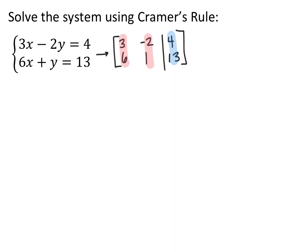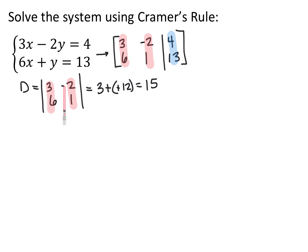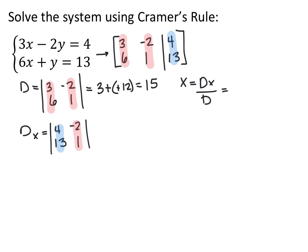We have a system of equations: 3x minus 2y equals 4 and 6x plus y equals 13. I wrote an augmented matrix for it and will solve using Cramer's rule. First, find the regular determinant D — the determinant of just the coefficient matrix without the answer column. Looking at just the coefficients, we get 3, negative 2, 6, 1. Multiply down, subtract, multiply up, and we end up with a determinant of 15. Now for x: replace the x column with the answer column, so replace 3 and 6 with 4 and 13. Multiply down gives 4, subtract multiply up gives negative 26, so the determinant Dx is 30. Therefore x equals Dx over D, which is 30 divided by 15, giving us 2.